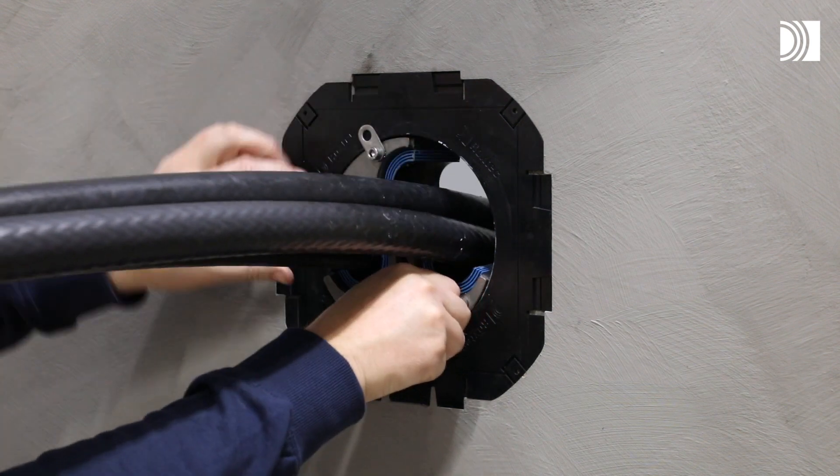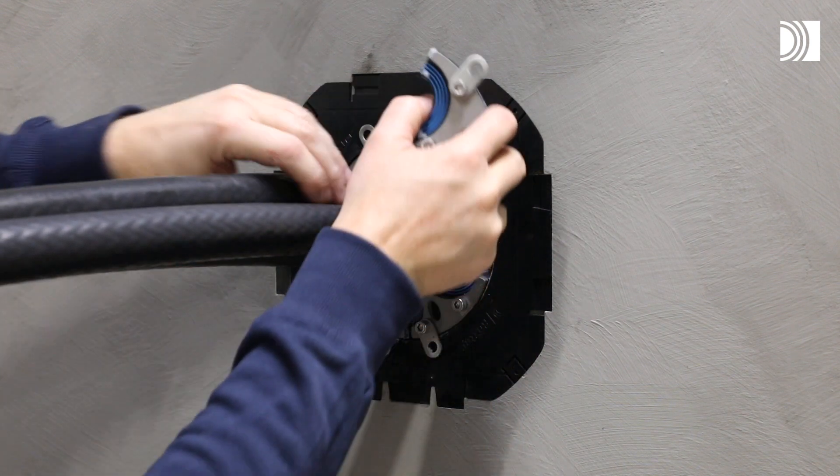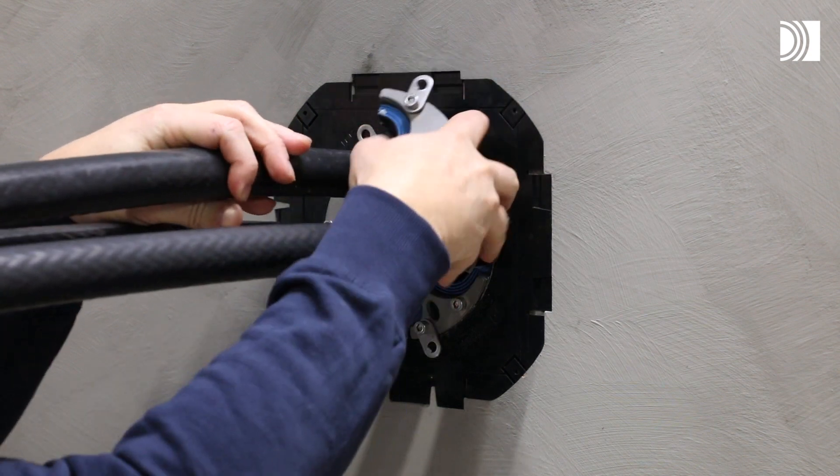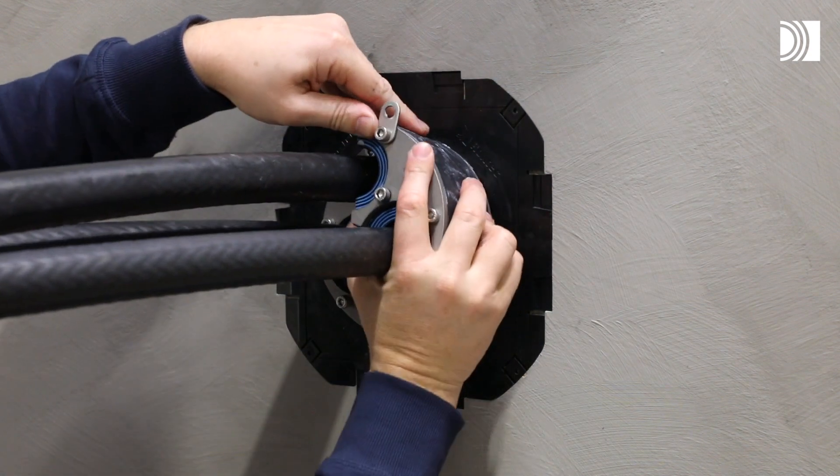Continue the reinstallation: pull the cable or pipe through, adapt, lubricate and insert the seal parts, and then tighten the screws.